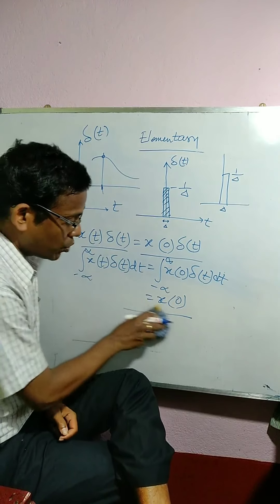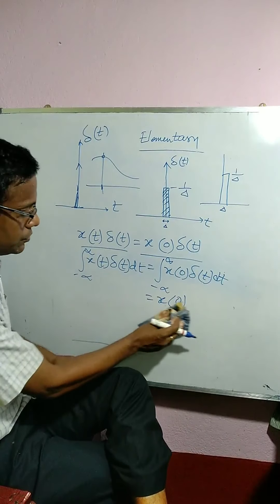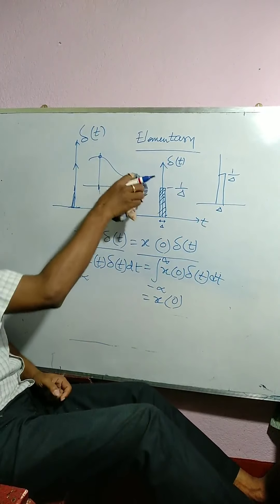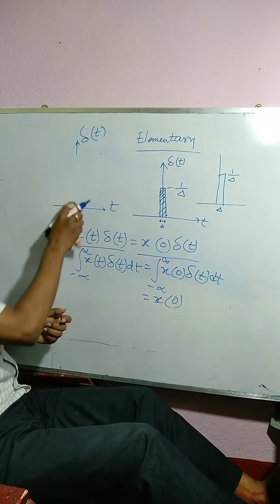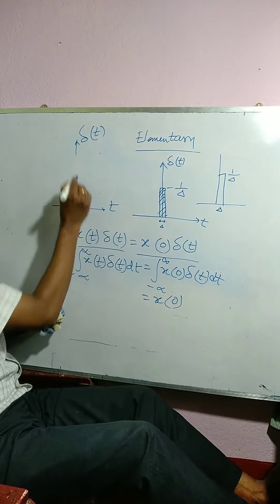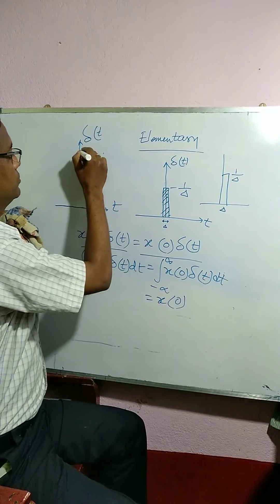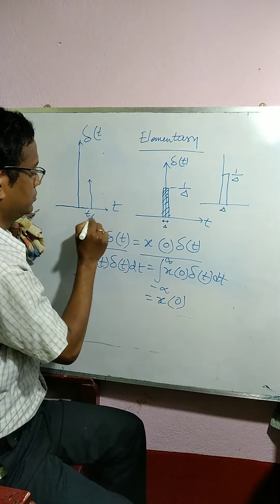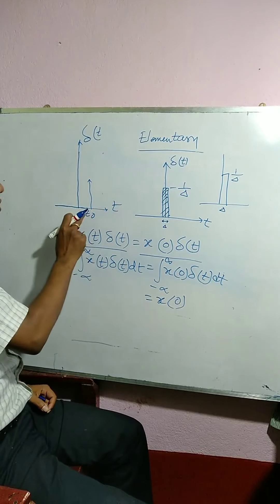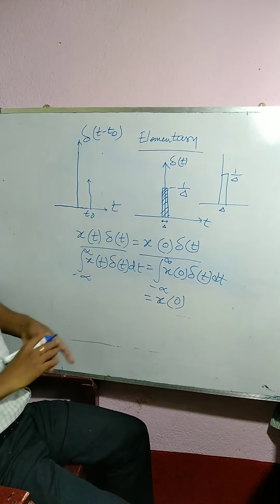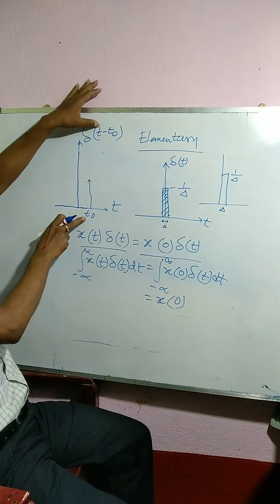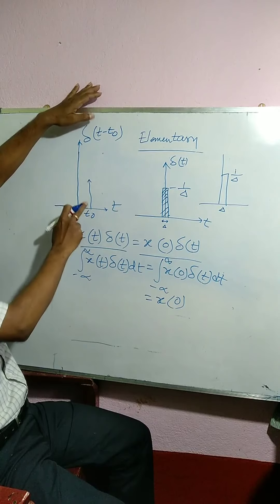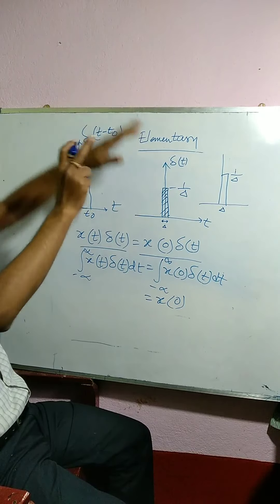There is one more important property called the shifting property. If delta(t) is shifted to t0, then we can say at t equals to t0 it behaves like delta(t-t0). That means at t0, it is infinitely large in such a way that the area under the curve is 1.